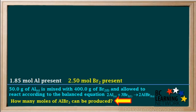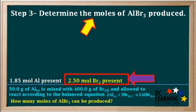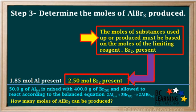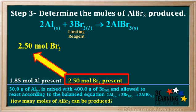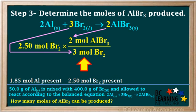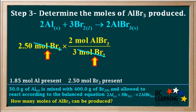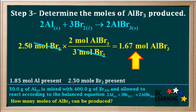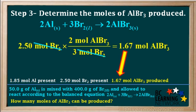In step 3, we calculate the moles of aluminum bromide that can be produced. Remember, we must start with the moles of the limiting reagent, Br2 — we have 2.5 moles. All of the limiting reagent will react; this is always the case. So we write 2.5 moles of bromine and multiply by the mole ratio 2 moles AlBr3 to 3 moles Br2, giving us 1.67 moles of aluminum bromide produced.